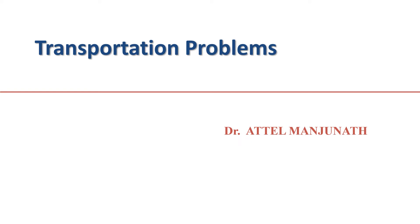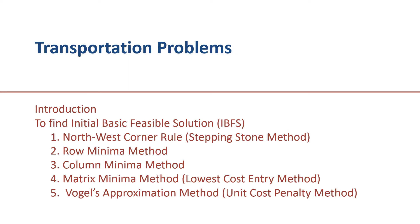Hi friends, today in the first class we will discuss about the transportation problem. We will discuss the introduction and how to find the initial basic feasible solution by various methods. There are five different methods available: the northwest corner rule, also known as the stepping stone method; row minima method; column minima method; matrix minima method, also known as lowest cost entry method; and Vogel's approximation method, also known as the unit cost penalty method.